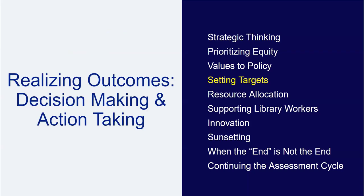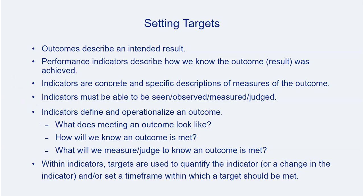Assessment results can also be used to set targets for indicators, articulating goals and intended outcomes for library work. Library services, resources, and spaces are intended to achieve outcomes — ideally stated in internal or external documentation — and the goals should be clearly articulated. Library internal documentation often includes performance indicators that can be used to discern whether an outcome is being met. Indicators are concrete, measurable, and observable, and are intended to communicate what meeting an outcome looks like, or how we can know when an outcome has been met.